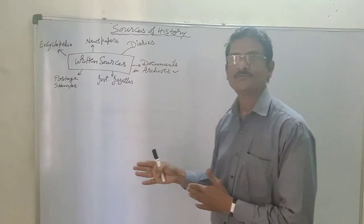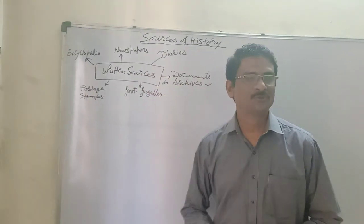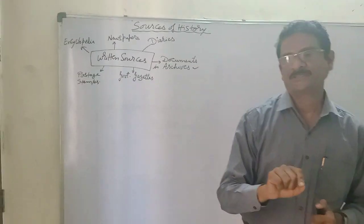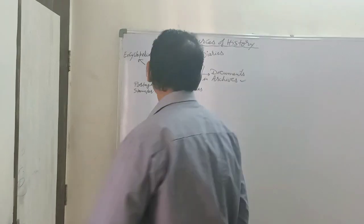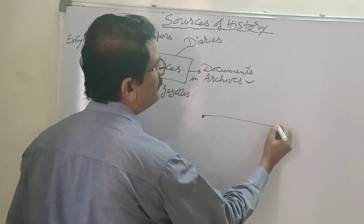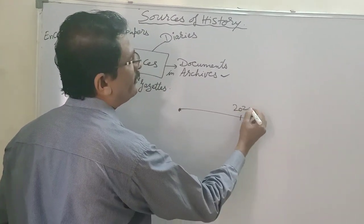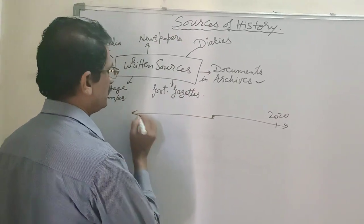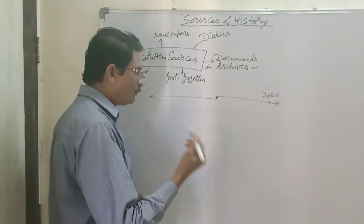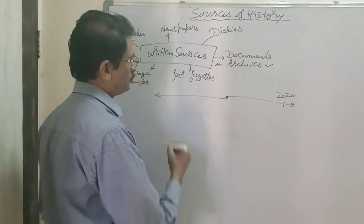There are various sources of history. One among them is written sources. When we study about history, we have to understand that history is in two parts: one is the prehistoric period, and the second is the historic period.